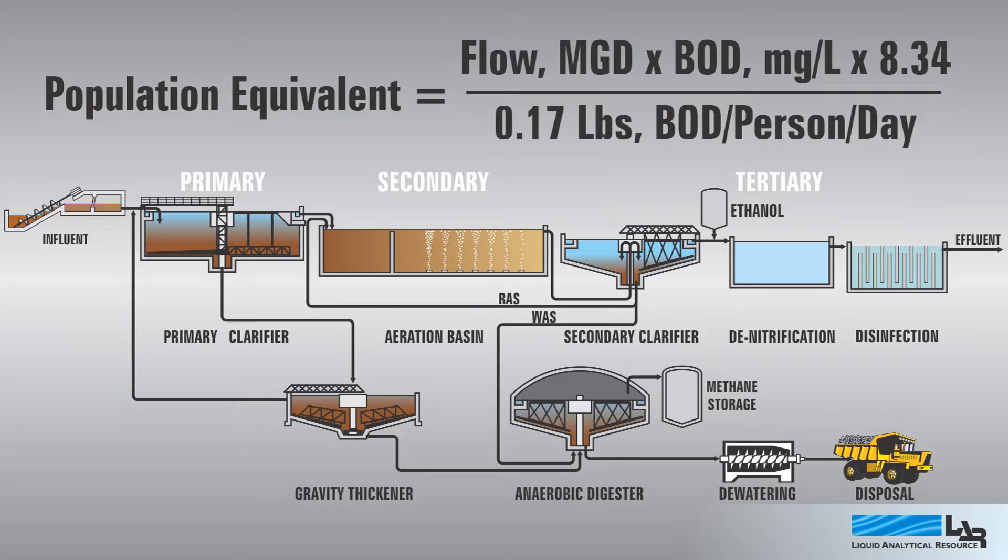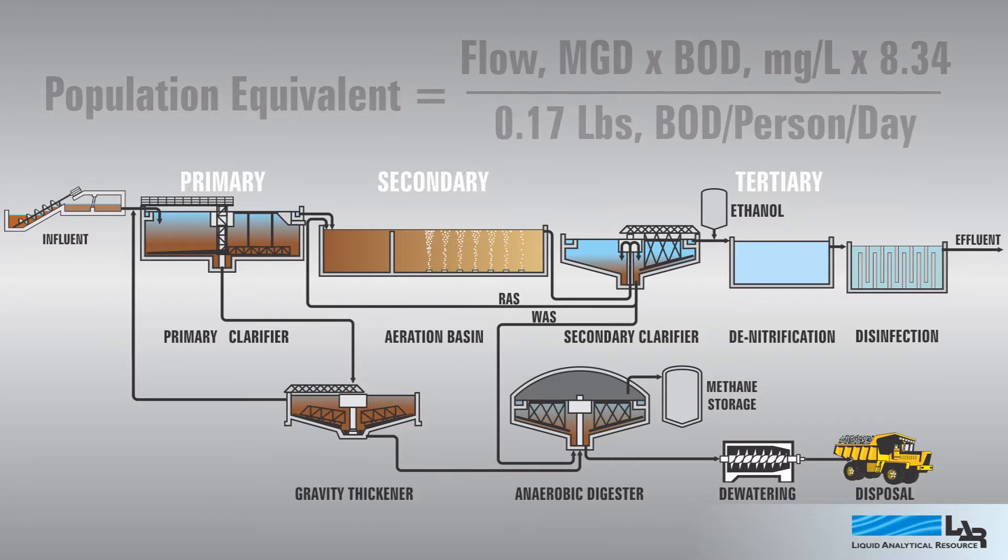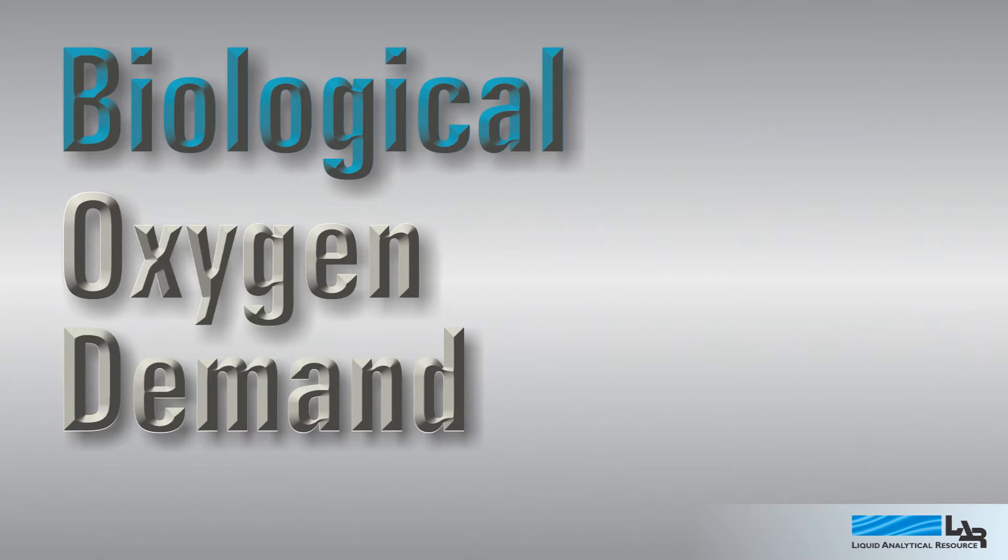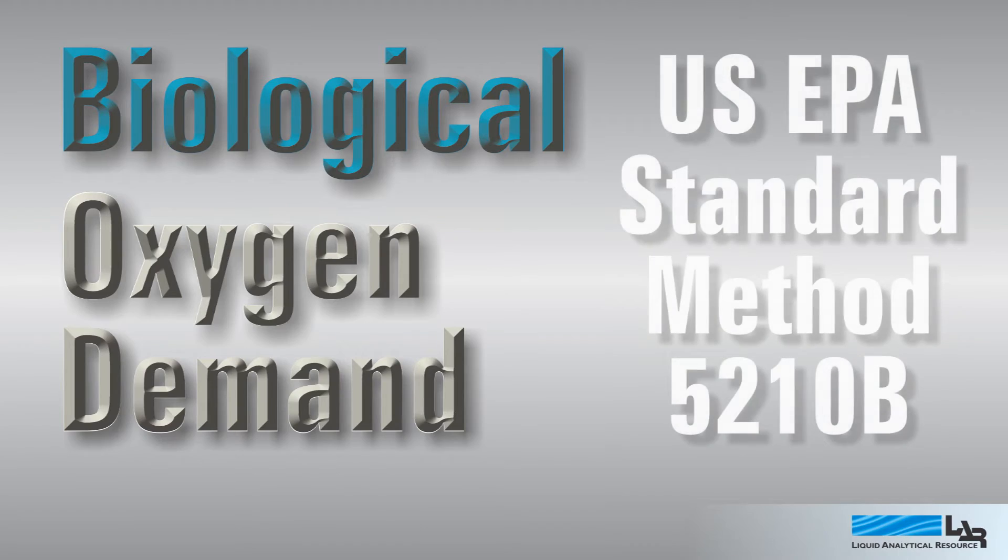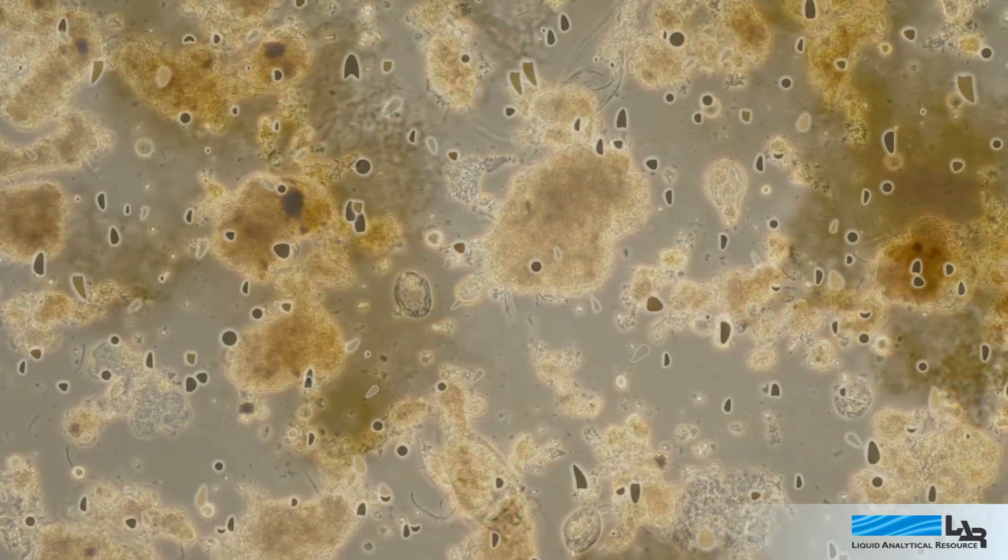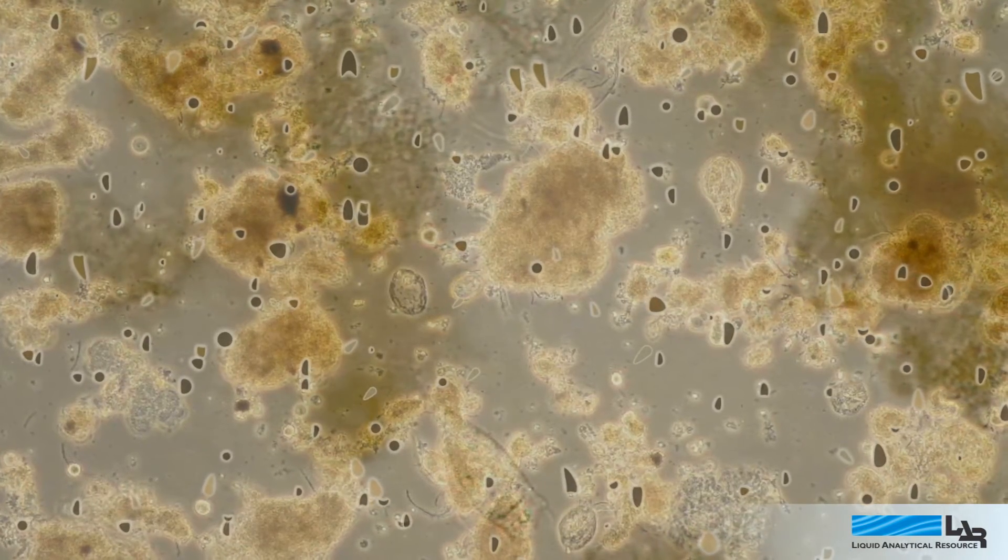Oxygen is so important to sludge treatment that a plant's capacity is defined in pounds per day of biological oxygen demand, or BOD. The standard method for measuring BOD is U.S. EPA Method 5210B. Since the test measures microbial oxygen consumption, it requires five days to complete.